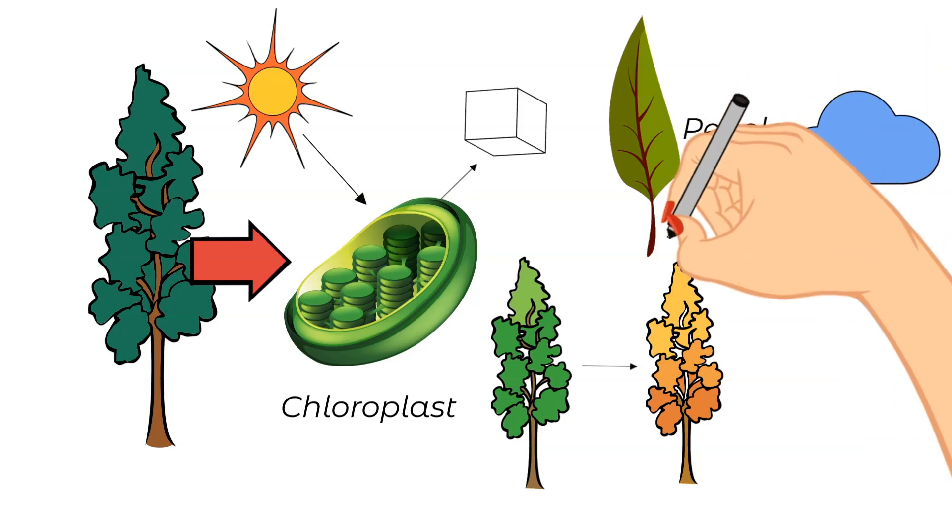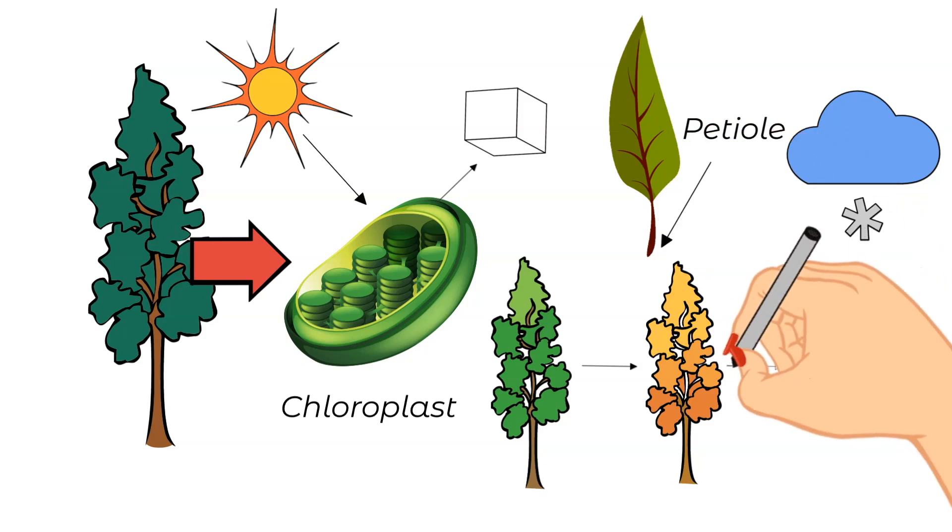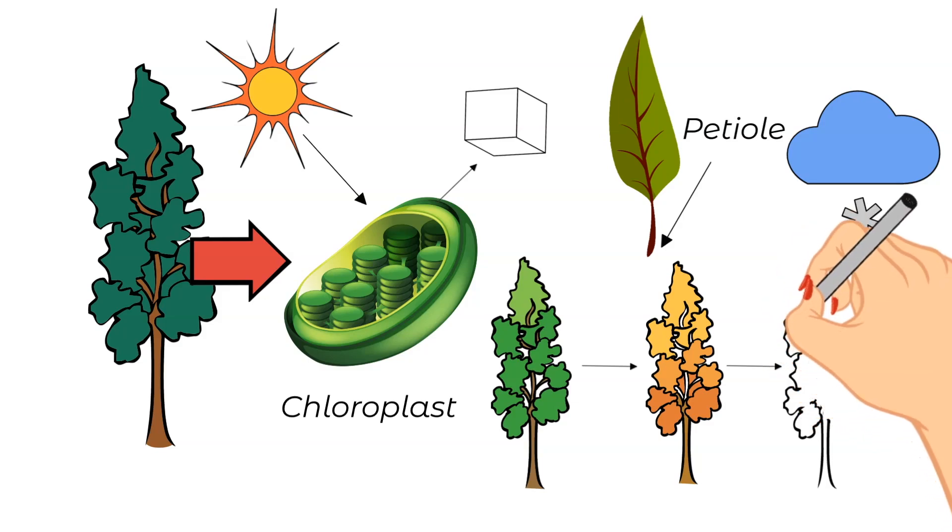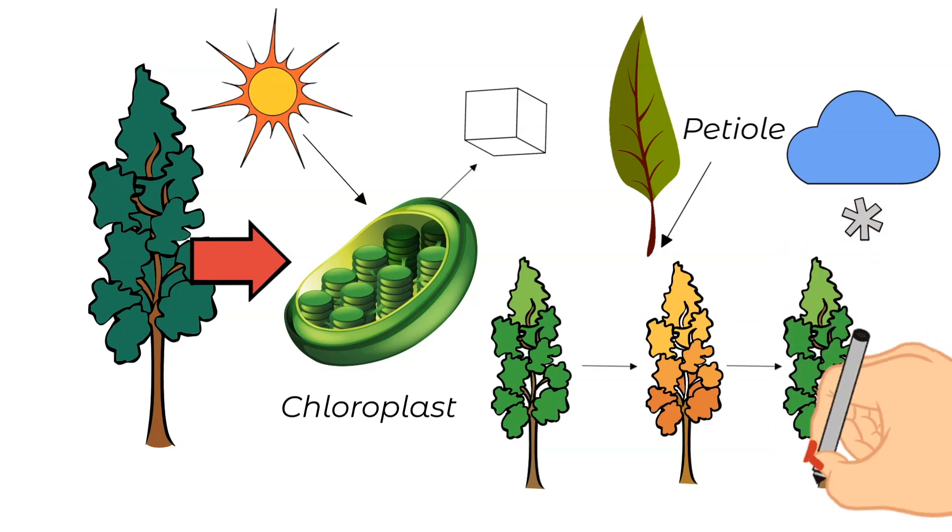Remember last week we talked about the leaf's petiole. Well, the base of the leaf's petiole at this time becomes weaker so that the leaves can fall off due to the wind. Thankfully, the leaves, as you have seen, do grow back when the seasons change again to spring.